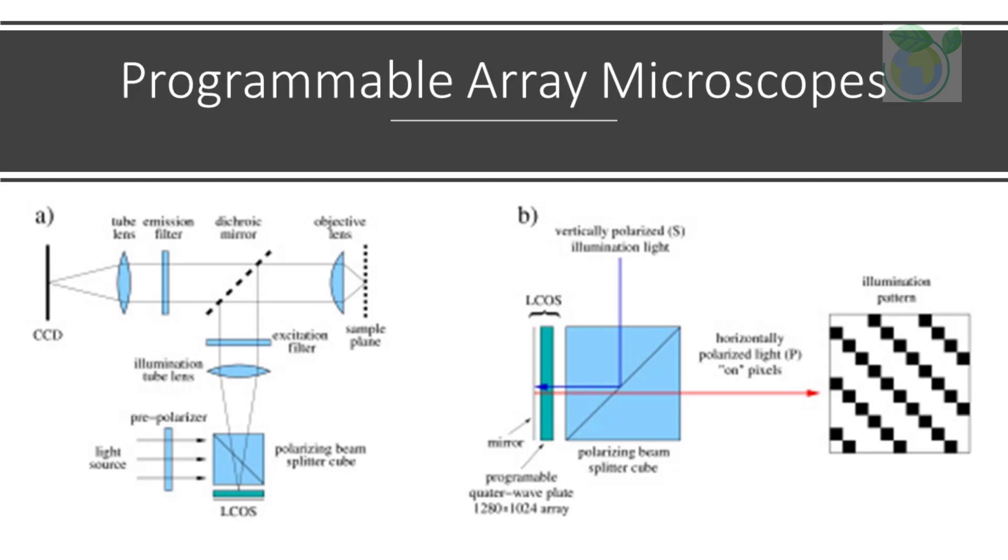Programmable array microscopes, termed as PAM, use an electronically controlled spatial light modulator, termed as SLM, that produces a set of moving pinholes. The SLM is a device containing an array of pixels with some property—opacity, reflectivity, or optical rotation—that can be adjusted electronically. The SLM contains microelectromechanical mirrors or liquid crystal components. The microscope's illumination tube lens and objective collect the light from pixels in the ON state and image the microdisplay onto the sample. Subsequently, the image is usually acquired by a charge-coupled device, CCD, camera.